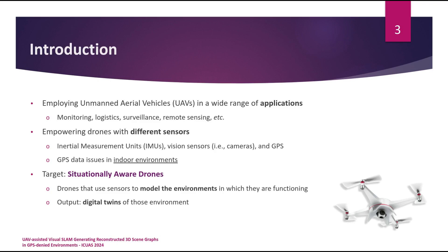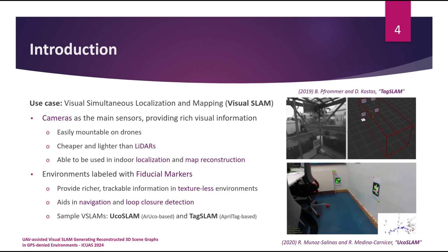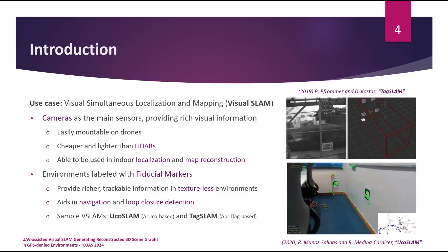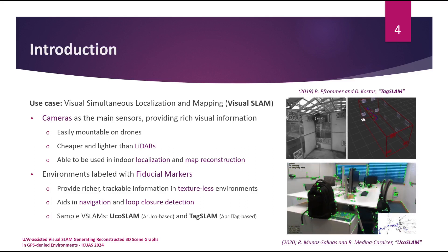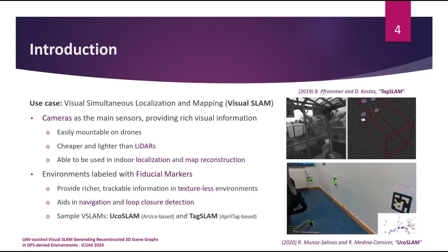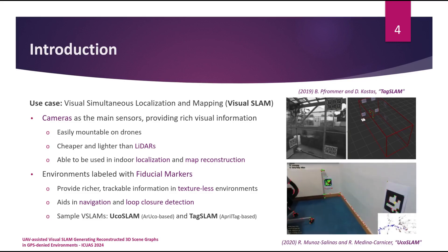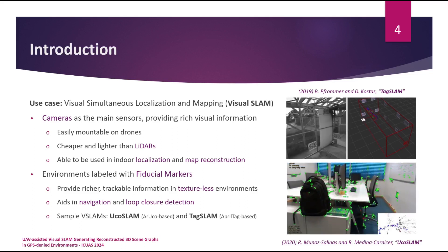As a target of this research, we are going to talk about situational-aware drones, which are drones that use different sensors to model the environments in which they are functioning and flying, and the output would be digital twins of these environments. One of the main use cases is visual simultaneous localization and mapping, or visual SLAM, in which cameras play a crucial role. Cameras as the main sensors of visual SLAM can provide rich visual information about the environment. They are also easily mountable on drones, lightweight, and cheaper compared to LiDARs, and they can be used in indoor localization and map reconstruction tasks.